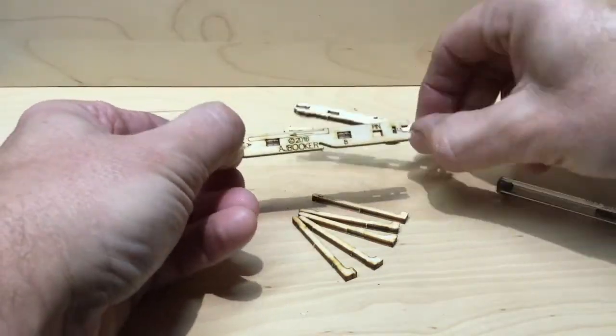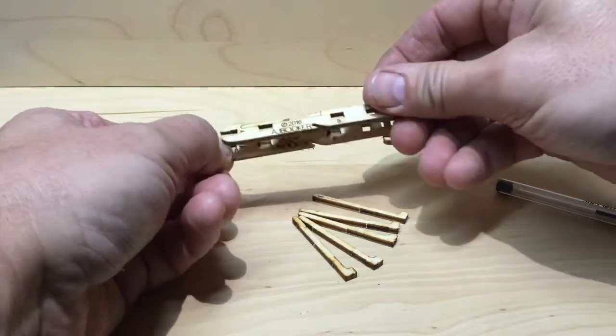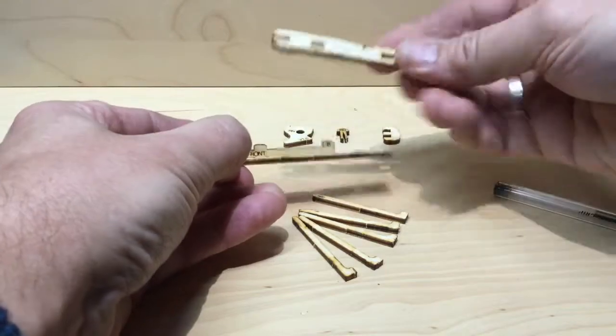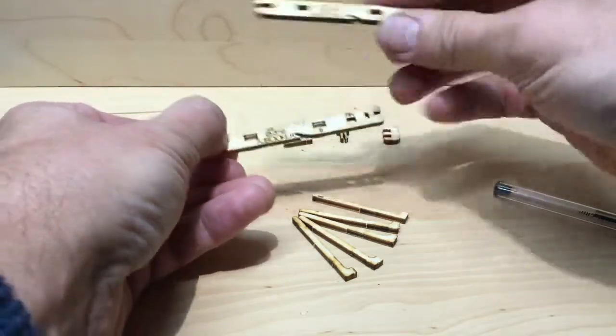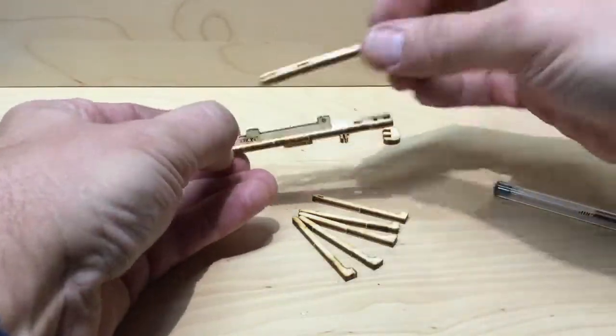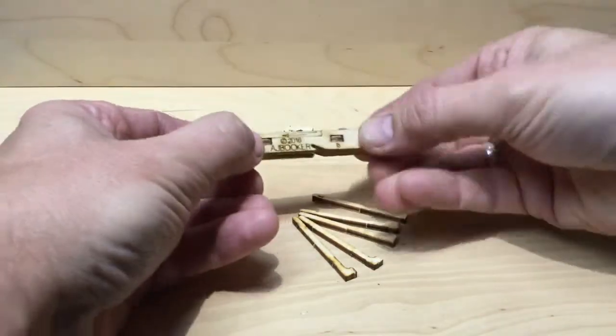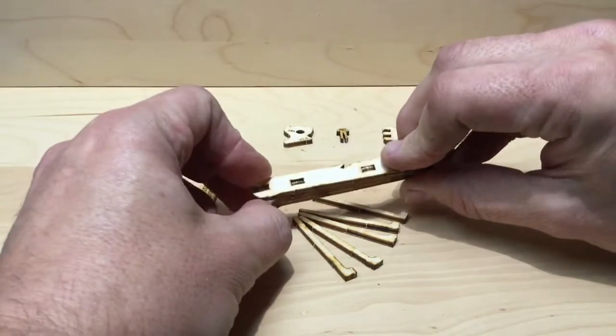Now take care with this piece that it's the same way round. The temptation is to put it so the writing is on the other side. Don't do that. Do it the same way round so the slot at the bottom is on the bottom of that piece. So if you've done it right, on one side you'll see writing, on the other side you won't.